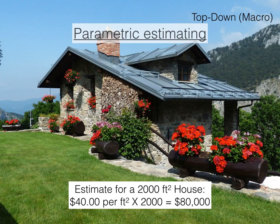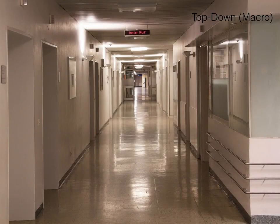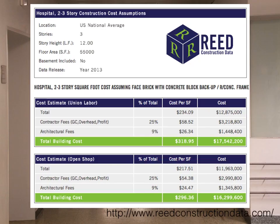There are lots of different types of data available about construction costs in different areas. For example, if we were considering a big hospital project, we could find data on how much it costs per square foot — in this case, $318 per square foot using union labor, or $296 using open shop or non-union labor. From that, we can estimate exactly how many millions of dollars it would take to construct the hospital.